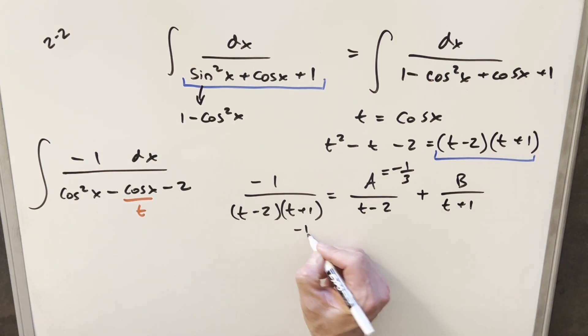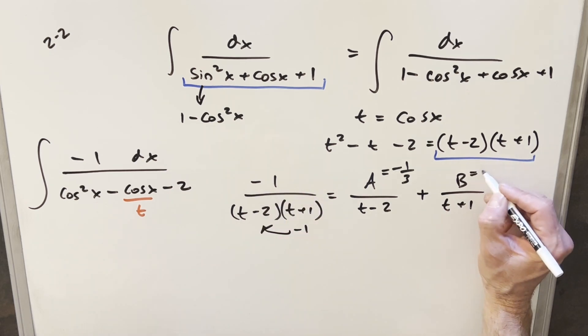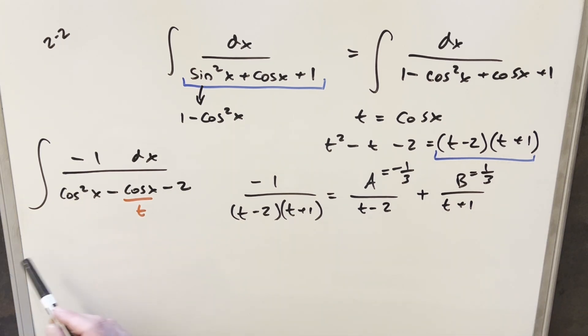Then doing the same thing over here for our second term, we'll plug in minus 1, cover this up, plug in here. We get minus 3. Minus 1 over minus 3 gives me a positive 1 third for our b value. So now I'm ready to take this and put it back into an integral and continue there.